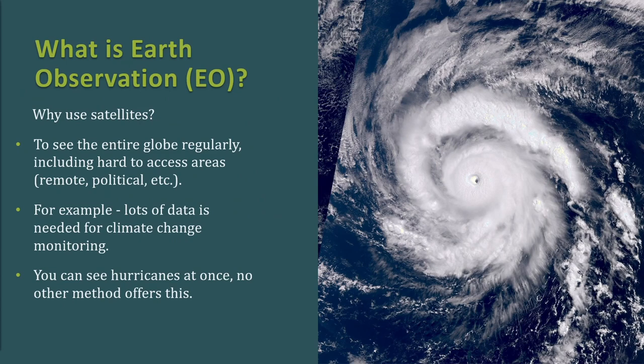So what is Earth observation? Essentially it's gathering information about planet Earth, and the context here is satellite-based remote sensing. Why use satellites? They allow you to see the entire Earth regularly, including hard-to-access areas — whether physically or politically remote. Lots of data is also needed for climate change monitoring, which satellites can provide. You can also see hurricanes all at once, and no other method offers this.